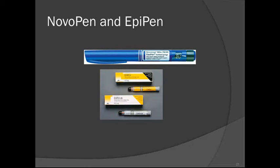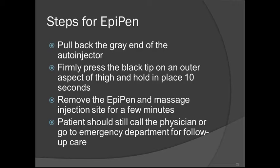Novolog or insulin pens have changed in recent years — they can now be kept at room temperature and don't always require refrigeration. Steps for an epi-pen: pull back the gray end of the auto-injector, firmly press the black tip on the outer aspect of the thigh and hold for 10 seconds, remove the epi-pen and massage the injection site for a few minutes to help with absorption. Patients should still call their physician and go to the emergency department for follow-up care.